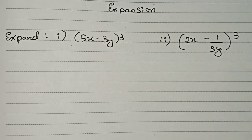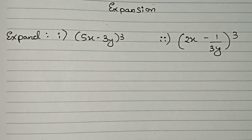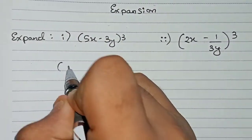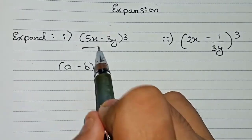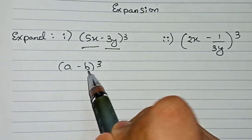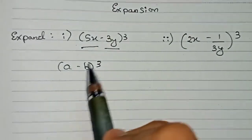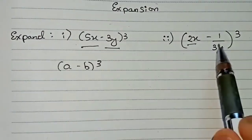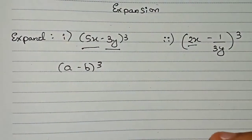First we write the identity that we will use. For both these questions we will use a single identity: a minus b whole cube. For the first question, take 5x as a and 3y as b, so it becomes a minus b whole cube. For the second question, take 2x as a and 1 by 3y as b, so it also becomes a minus b whole cube.